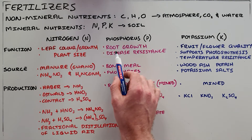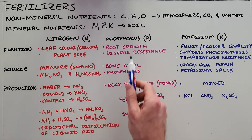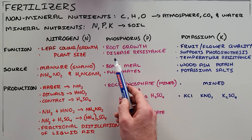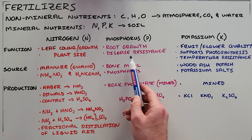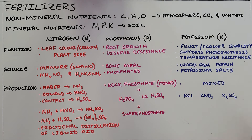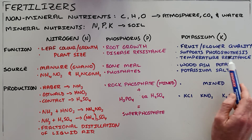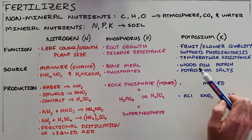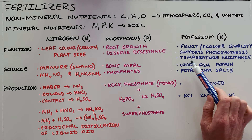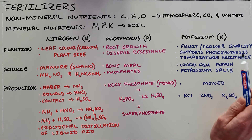Phosphorus is involved in root growth in plants and also helps with disease resistance. Potassium promotes fruit or flower quality and growth, supports photosynthesis, and also helps with temperature resistance and drought resistance.